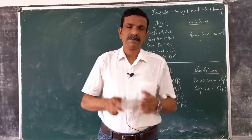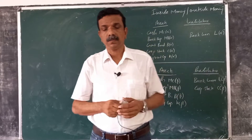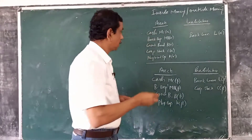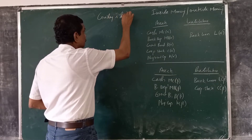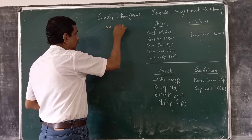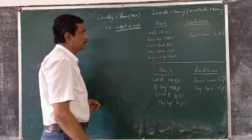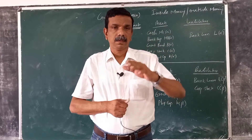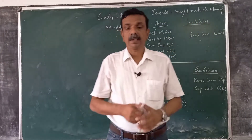The first major attempt to solve the question whether money is an asset or not was done by Gurley and Shaw in 1960. Gurley and Shaw made a distinction between inside money and outside money.